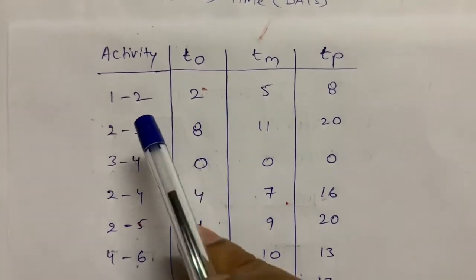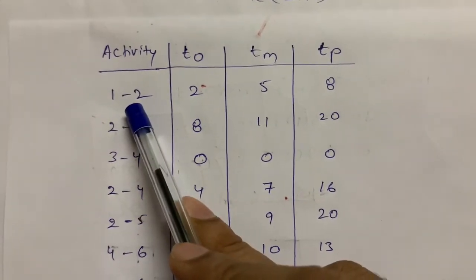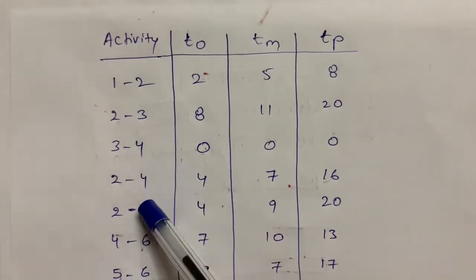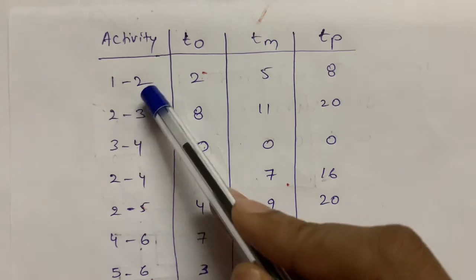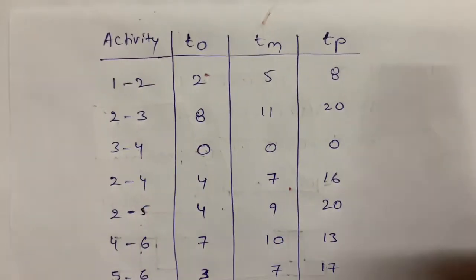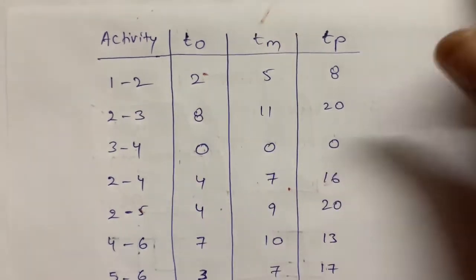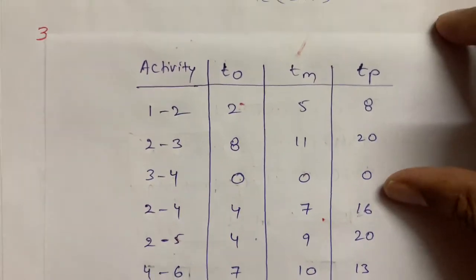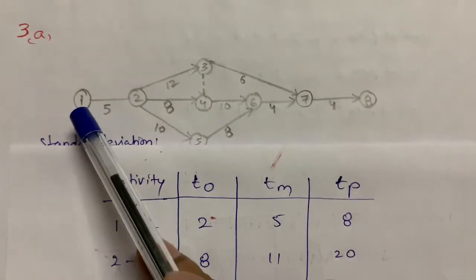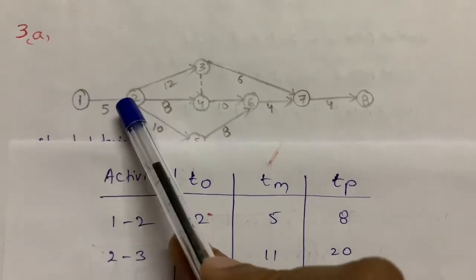First one is 1 to 2, which is one activity. After completion of this 1 to 2 activity, there are 3 activities parallelly starting: 2 to 3, 2 to 4, and 2 to 5. First we need to plot 1 to 2. In a network diagram, there are activities and events. These circles are called events and these arrow marks are called activities.